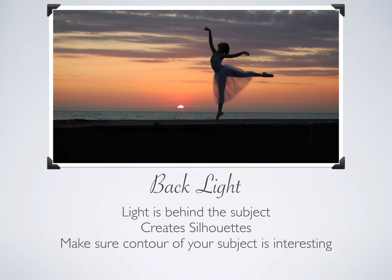Back light is really fun to play with. Lighting is behind the subject. It creates silhouettes or semi-silhouettes like in this picture. If you're creating a silhouette, you have to make sure that the contour — the shape of your subject — is actually interesting, or else it's just going to be like a black blob. This is a great way to use the sunset or sunrise. If you have a big window with a ton of light coming in — almost like when we were photographing in the cafeteria — same sort of thing. Just pay attention to the shape of your subject.